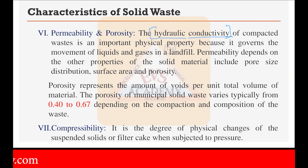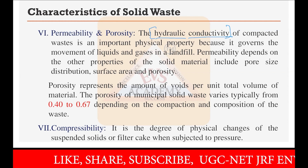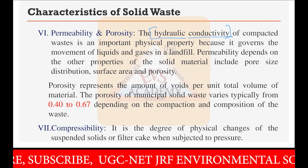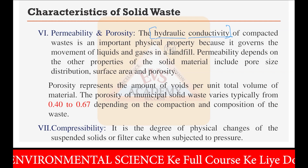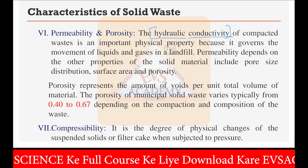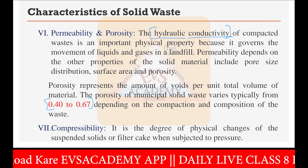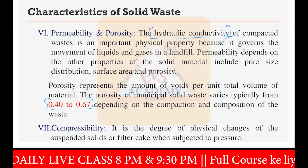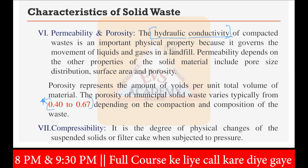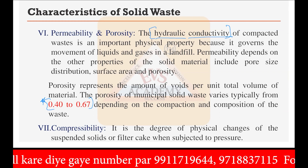Porosity represents the amount of voids per unit total volume of the material. The porosity of municipal solid waste typically varies from 0.40 to 0.67 depending on the composition of the waste. So out of 100%, about 40% to 67% of the area should be pores or voids present in the solid waste. This is the recommended range of porosity for municipal solid waste, which is very, very high.